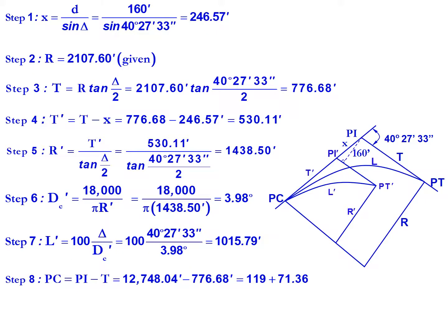Our next step is to determine our PC. So we're going to subtract our new tangent length, we're going to subtract the tangent length to get back to the PC. This is our existing tangent length. So we'll have a PI of 12,748.04 feet. We're going to subtract off that tangent length of 776.68 feet to get a PC station of 119 plus 71.36.